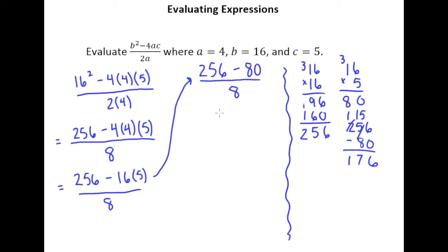So you get 176 on top and of course now all that's left is to divide 176 by 8. Let's see, 8 goes into 17 twice and then 8 goes into 16 twice and so we know that this is equal to 22.